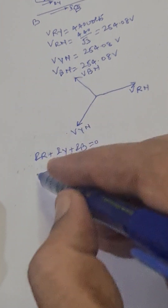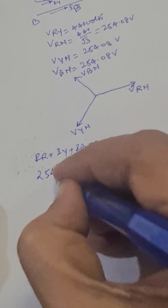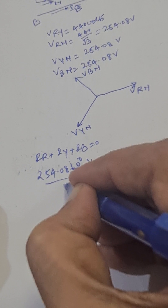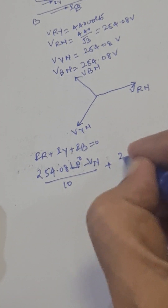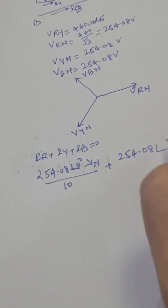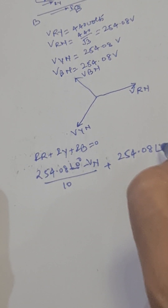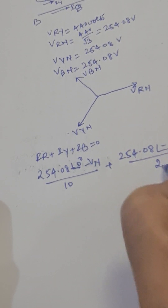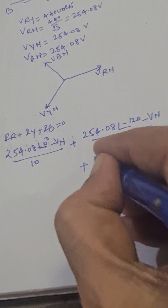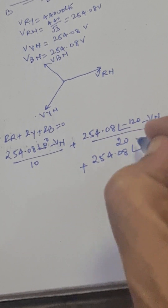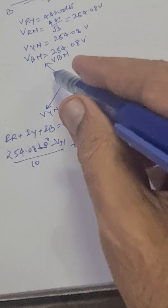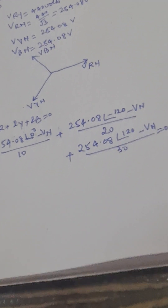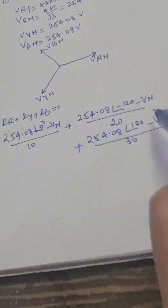Using the expression for each current, we write: (VRN − VN)/10 + (VYN − VN)/20 + (VBN − VN)/30 equals zero. In this equation, we have only one unknown, which is VN, so we can calculate VN.